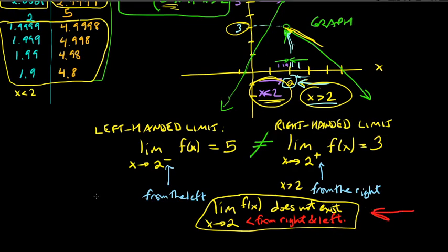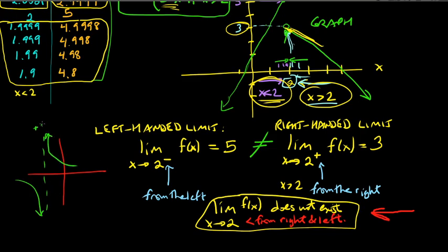In some sense, this was also not true when we had the vertical asymptote — it was approaching negative infinity from the left and positive infinity from the right. Because positive infinity and negative infinity are two different ideas, we gave up there too and said that the limit did not exist.